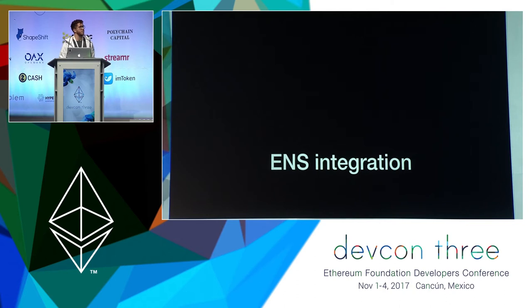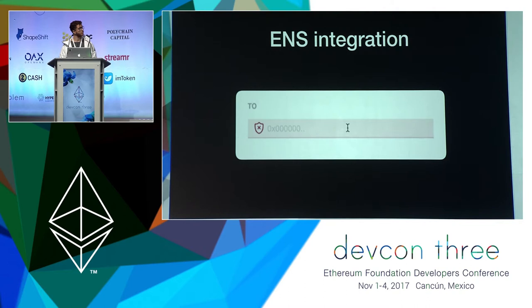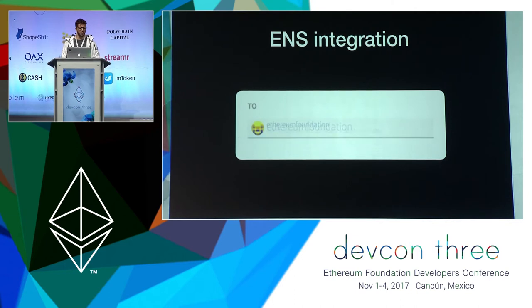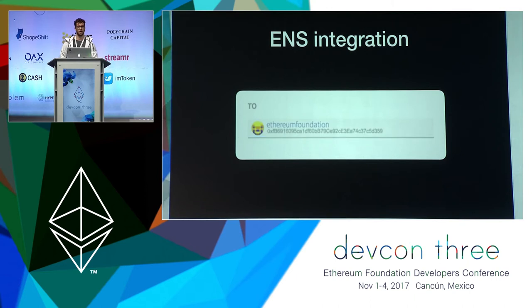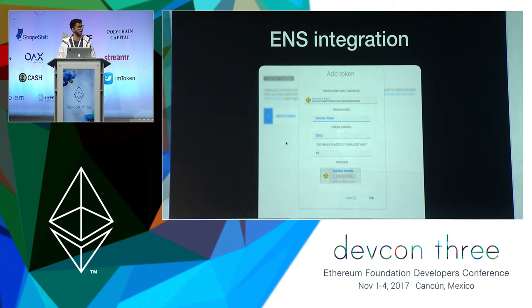Speaking of ENS integration, we also did some of that in the wallet. You're able to transfer Ether to a certain address like ethereumfoundation.eth, for instance. Or add a custom token — just put in the symbol of the token, search a previously made list, and get all the details.